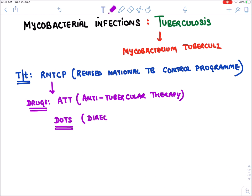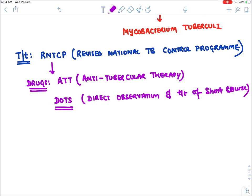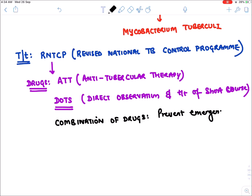DOTS stands for Direct Observation Treatment of Short Course — that means we give the drug to our patient under our supervision so that the patient should not miss the drug. Also, when treating TB we give a combination of drugs, not any single drug. The reason we give combination of drugs is to prevent emergence of resistance.